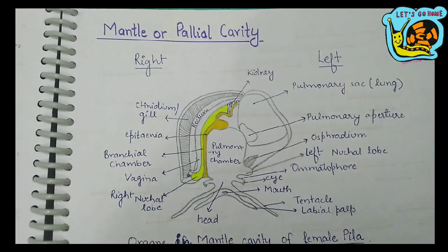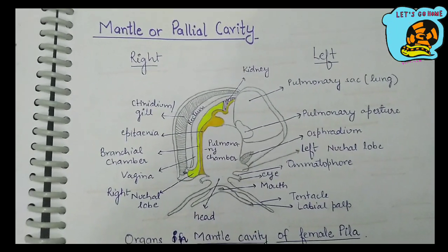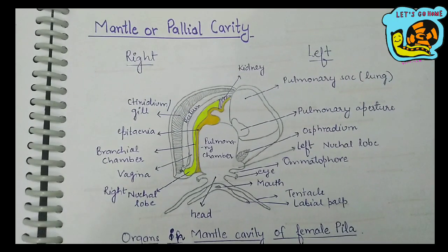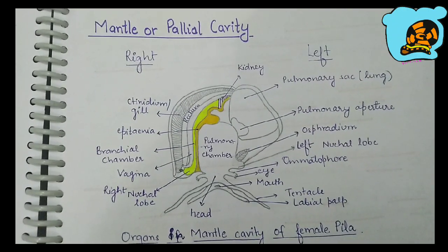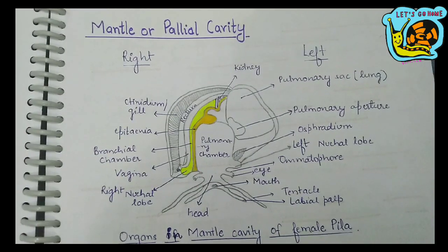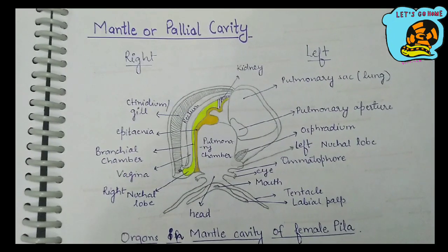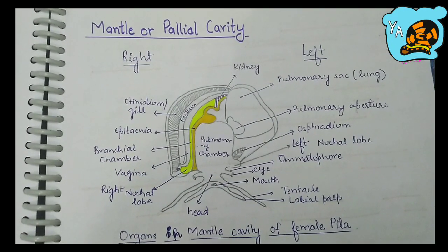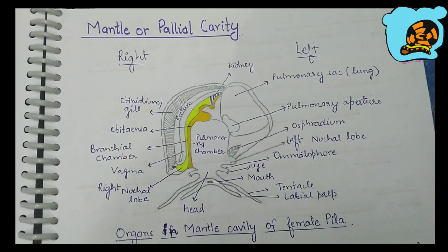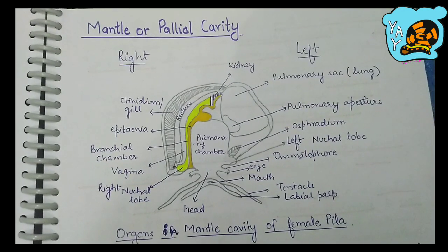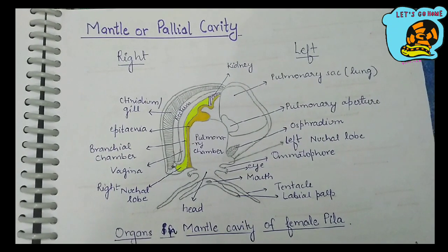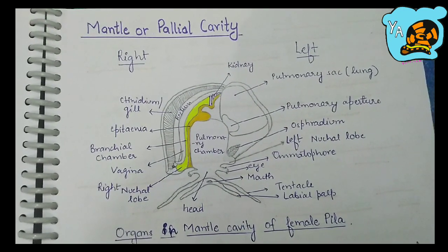This diagram represents the organs in the mantle cavity of female Pila. Here we can see there are various organs present in the body of the Pila. So except the foot and the mouth, we can consider all these organs that are present in the mantle cavity.